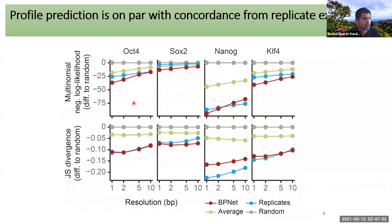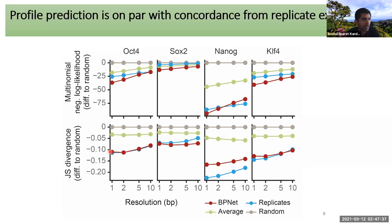Given the model performs so well, the prediction itself isn't the most important part since we already have the data. We really want to understand how the model makes predictions. We use a feature attribution approach: for any enhancer, we use back-propagation to recursively decompose the contribution of neurons across all layers back down to individual nucleotides. This algorithm is called DeepLIFT, published at ICML 2017.